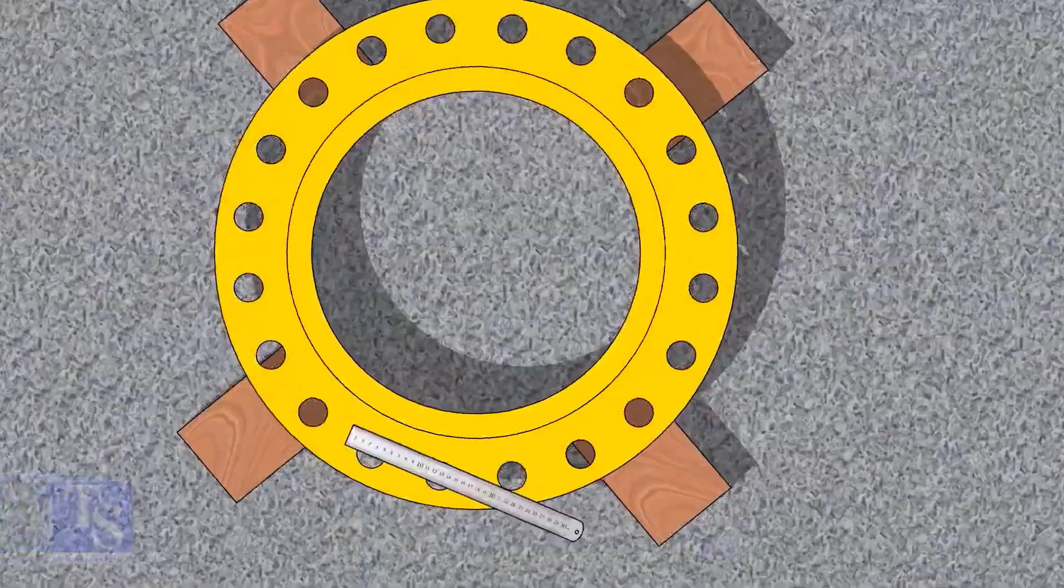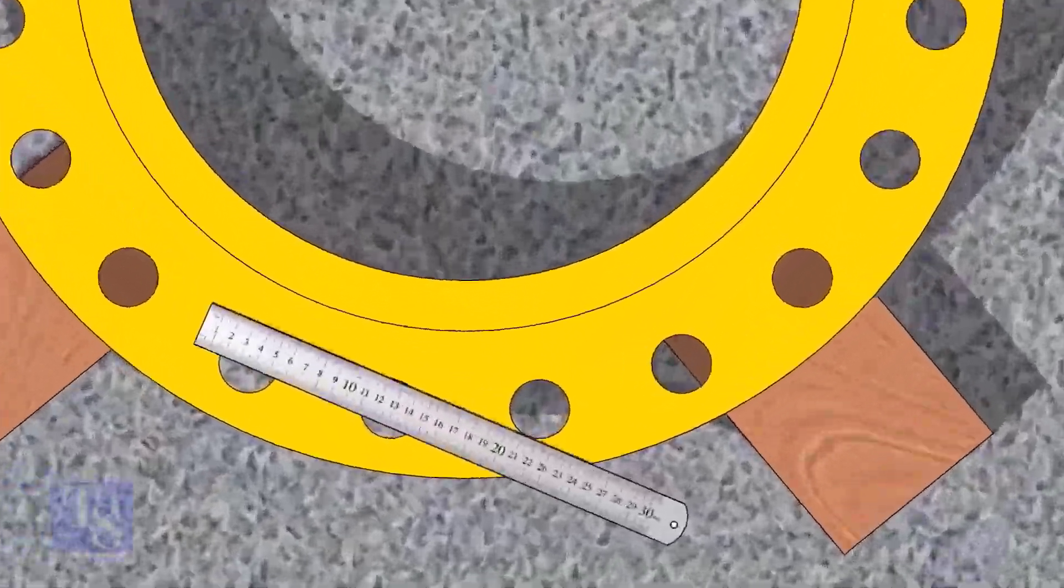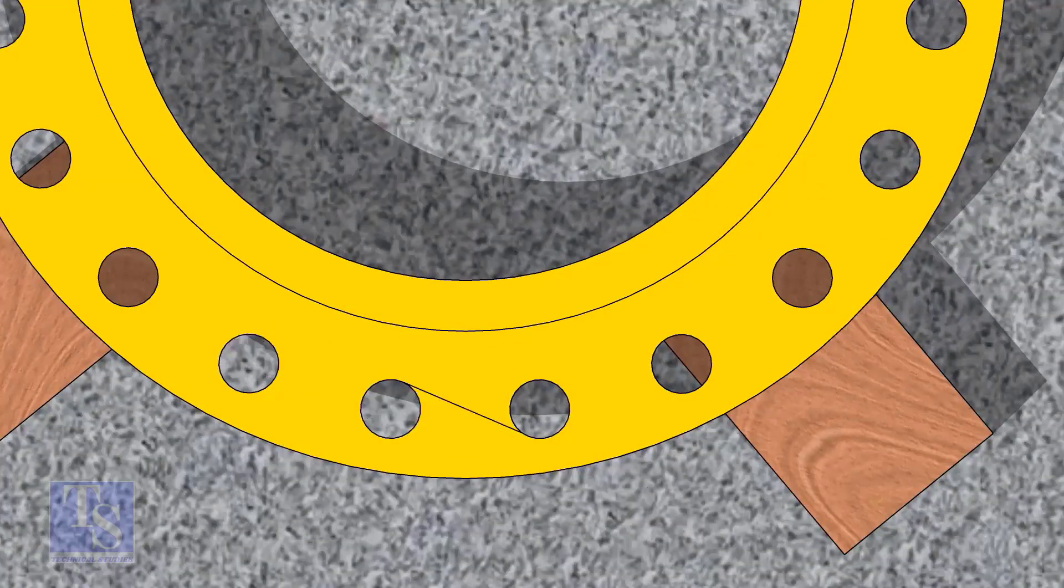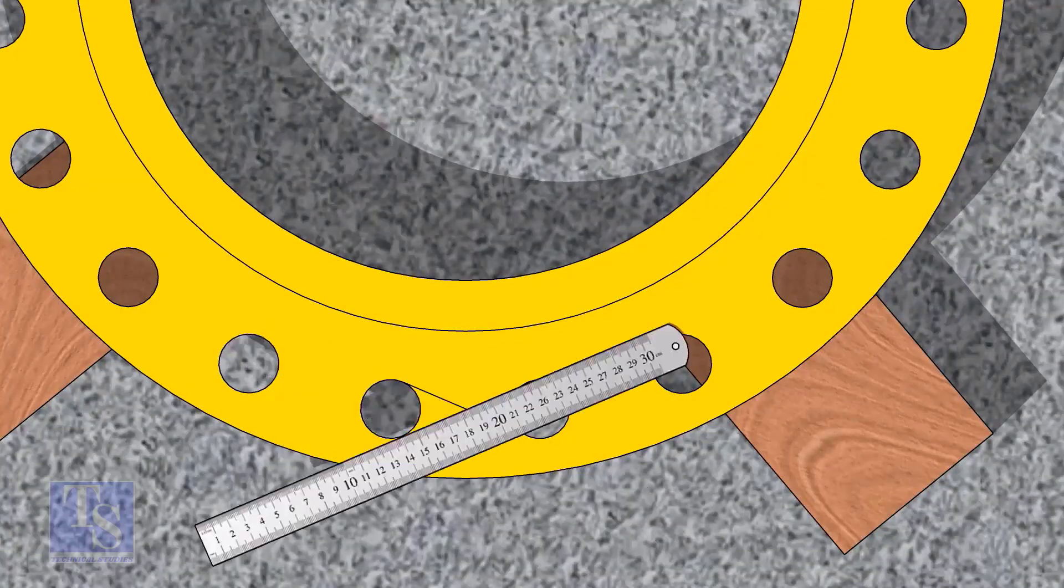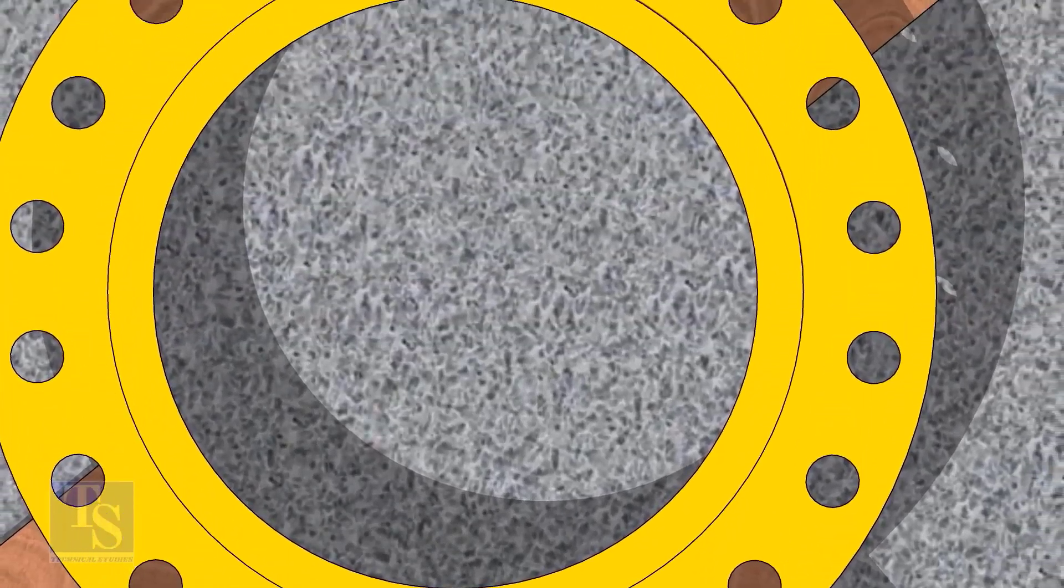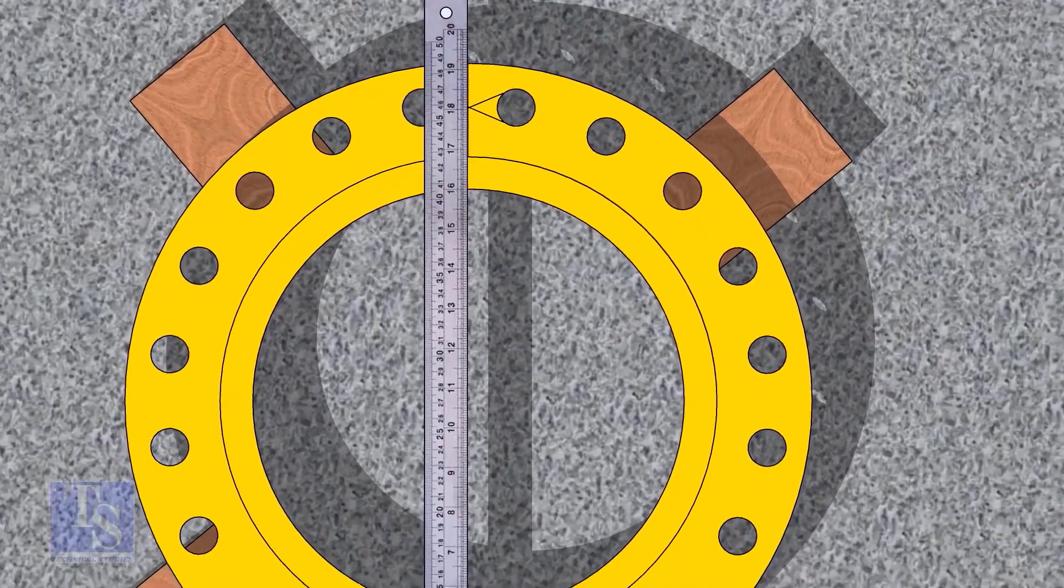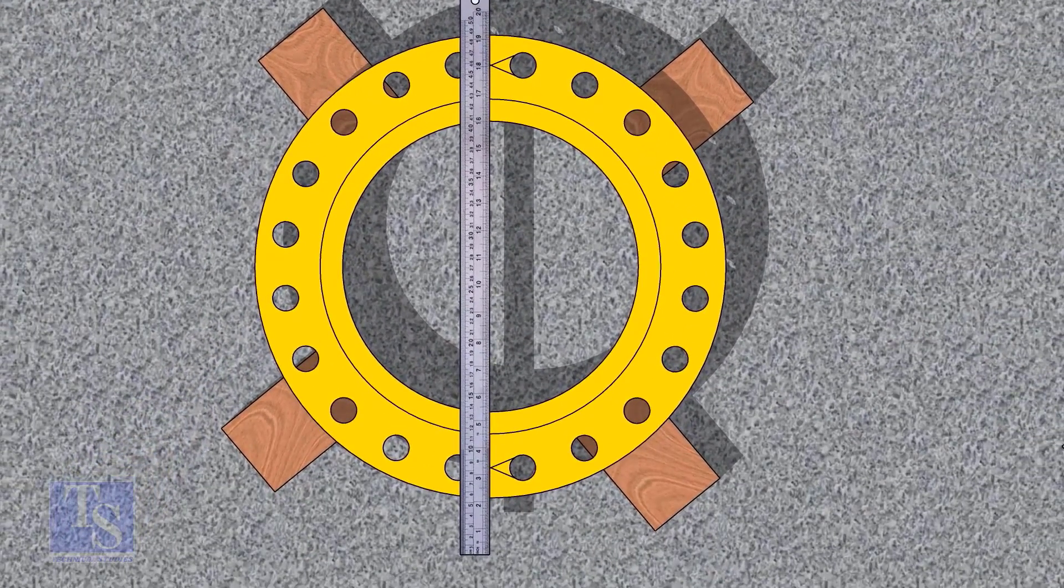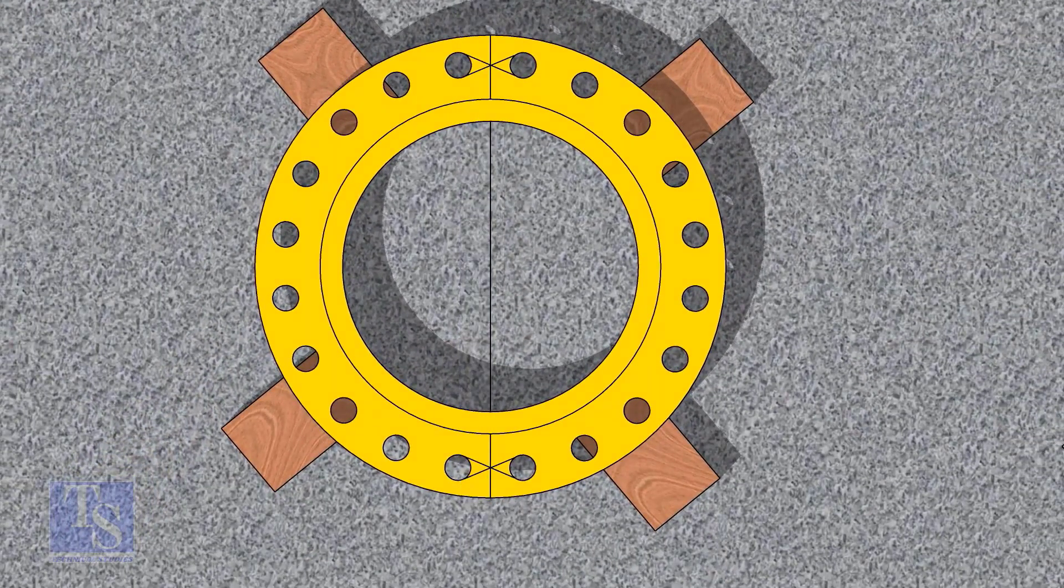Let us mark the center line of the flange. Draw tangential lines of two adjacent holes. The intersection of the lines is the center of these holes. Draw the center of the two holes on the opposite side. Draw the center line of the flange as shown.